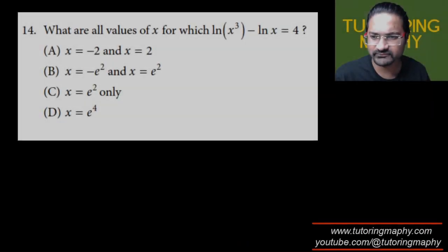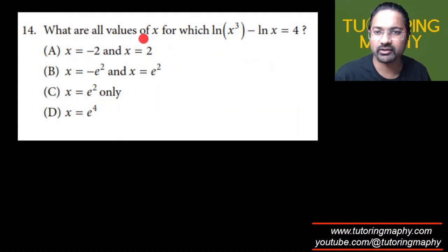Alright, let's see this question. It's given that what are all the values of x for which ln of x³ minus ln of x is 4. Pretty straightforward, we just have to use one simple property of log.